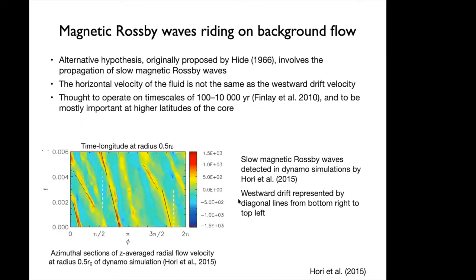An alternative hypothesis, originally proposed by Hyde in 1966, involves the propagation of slow magnetic Rossby waves. These are Rossby waves due to the Coriolis effect, but in the core we also have the magnetic field — specifically the azimuthal or toroidal field inside the core. In this case, the westward drift velocity is not the same as the velocity of the fluid; part of this westward drift would be explained by wave propagation. These waves operate on timescales of 100 to 10,000 years and are most important at high latitudes. They've been detected in dynamo simulations by Hori et al. 2015.